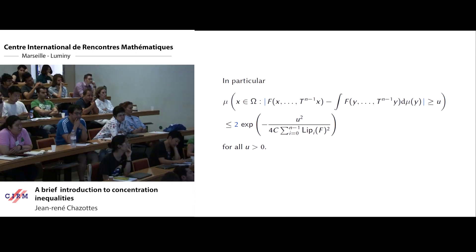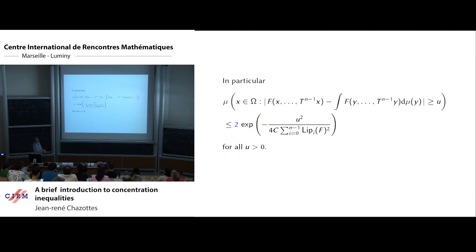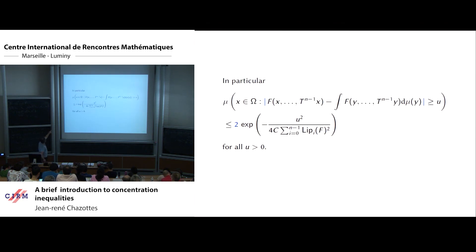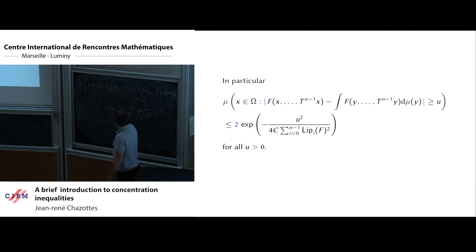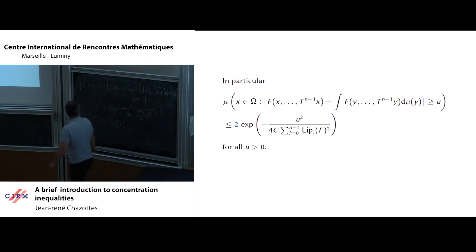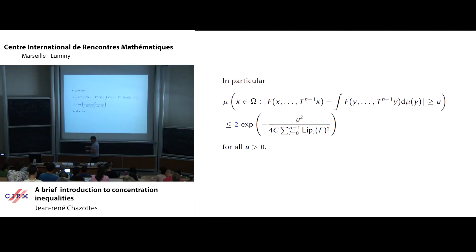This has exactly the same flavor as what we did at the beginning, but now for a dynamical system much more complicated than a random walk, and for nonlinear functions instead of just a sum. For the Birkhoff sum specifically, if you renormalize S_n/n minus the integral of f, you get a bound of the form exp(-n u² / constant), exactly the same kind of bound with different constants than the random walk.